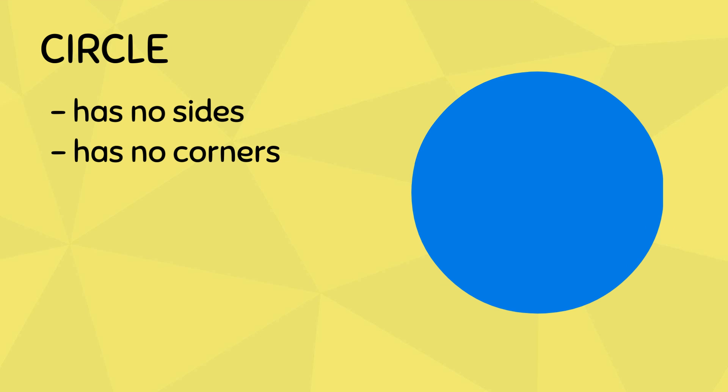sides and no corners. Examples of objects shaped like circles are coins or a round clock. Our next shape is